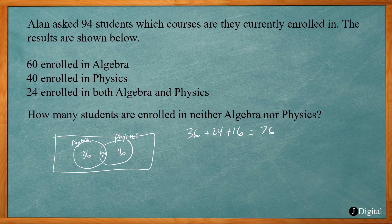Now if we surveyed 94 students, that's going to be 94 minus 76, which gives us 18. That's basically 18 people outside of those two circles. So our answer is 18.